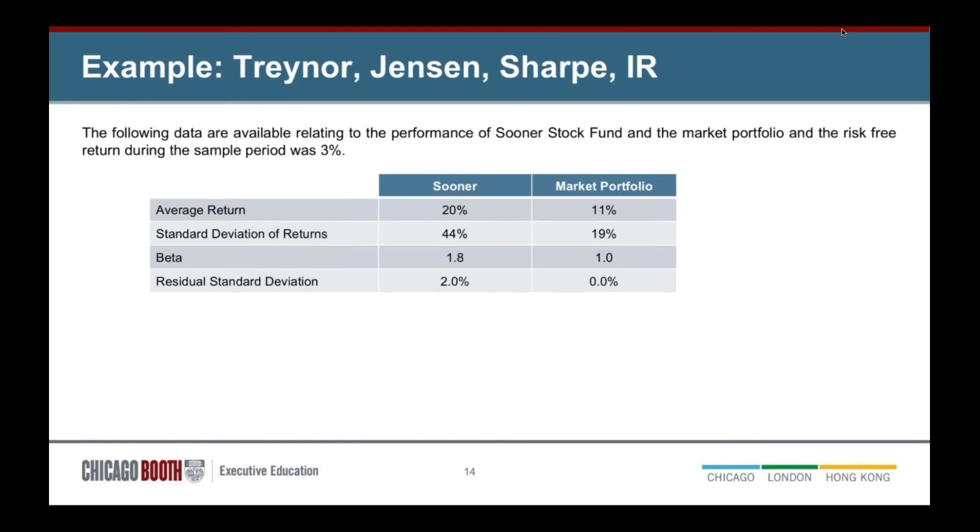So I've included in here some examples that you might want to try to do to see if you can do them. For example, calculating Treynor, Jensen, Sharpe, and information ratios. The Treynor ratio is the return on the portfolio minus the risk-free rate divided by beta. The Sharpe ratio is the return on the portfolio minus the risk-free rate divided by standard deviation. The information ratio is your alpha, which is the 20% minus 3 plus 1.2 times 11 minus 3 over your tracking error.